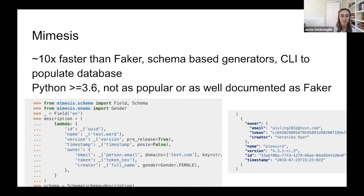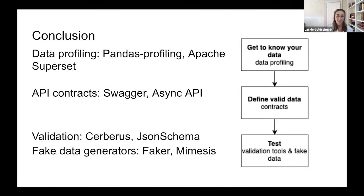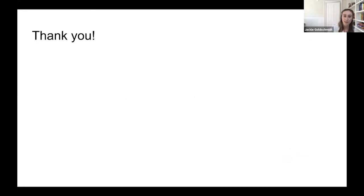In conclusion, when working with potentially messy real-world datasets and wanting to ensure high data quality: start by asking qualitative questions and digging into your data using profiling tools like Pandas Profiling or Apache Superset. From there, define what valid data is in your system using tools like Swagger or AsyncAPI. Write tests to ensure you're handling invalid data the way you expect, using validation tools like Cerberus or JSON Schema, and fake data generators like Faker and Mimesis. Thank you.